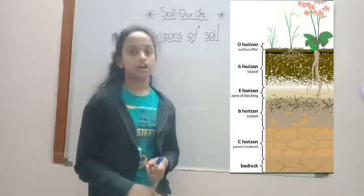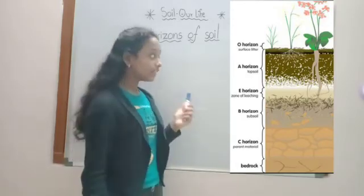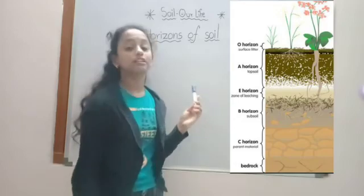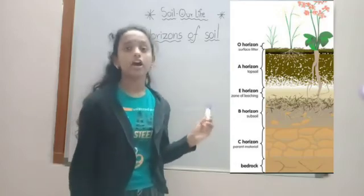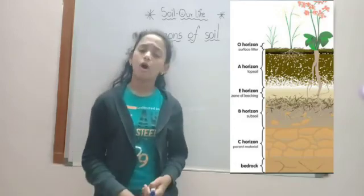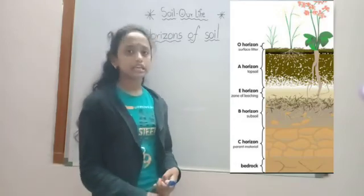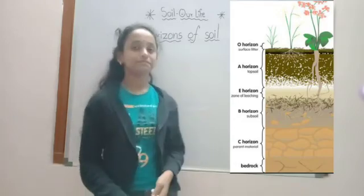The R-horizon is the unweathered rocky layer beneath all the other layers.